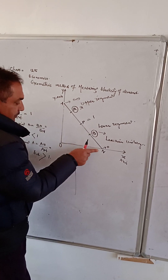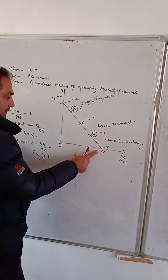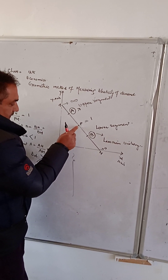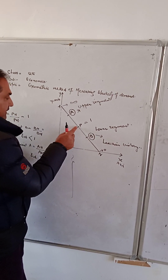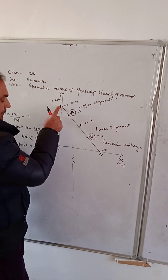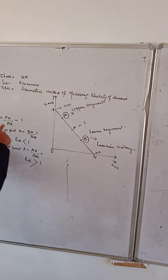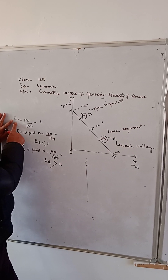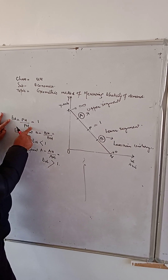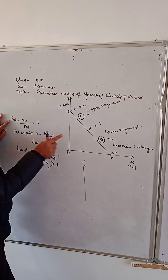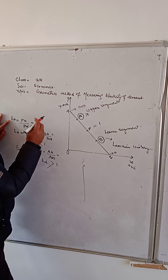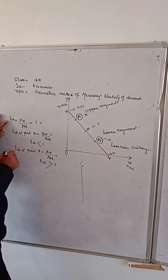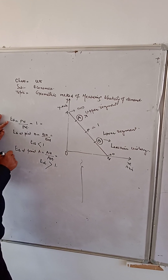If we divide this line into two equal parts, let's say this is P-N and this is P-M. The elasticity of demand will be P-N divided by P-M, which will be equal to 1. This means that elasticity of demand at this point is unitary elasticity of demand.